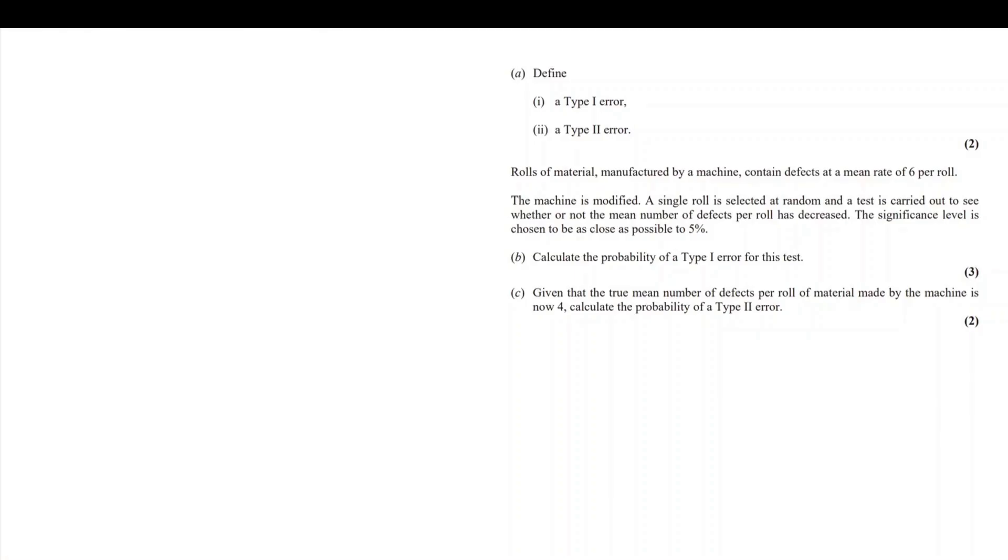In this question, we start off being asked to define a type 1 error and a type 2 error. A type 1 error is when we rejected H0 while H0 was in fact true.